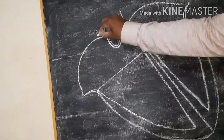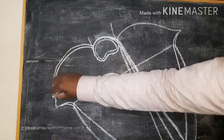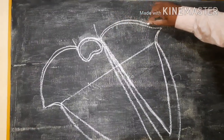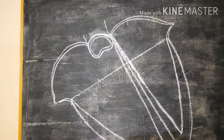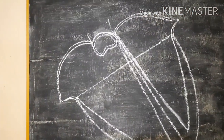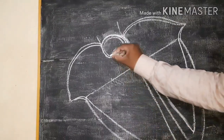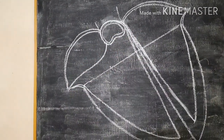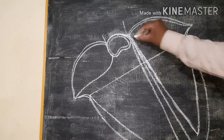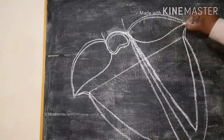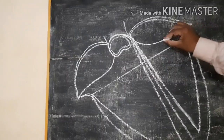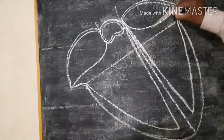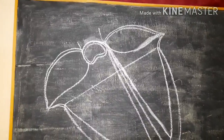You have to draw one more line on this, and one more line also here. Now you have to join this line like this — like this, like this, like this.